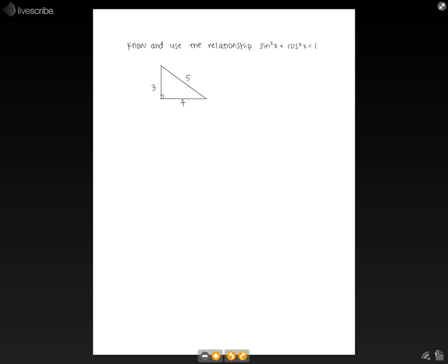So first, we have a 3, 4, 5 triangle. We can start out by just looking at the Pythagorean Theorem, which is a squared plus b squared equals c squared.